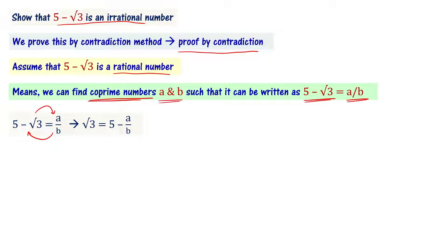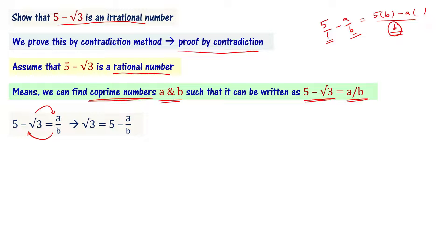Root 3 equals 5 minus a by b. Writing 5 as 5b divided by b, the common denominator gives us root 3 equal to 5b minus a divided by b. Since a and b are integers, 5b is an integer, and 5b minus a is also an integer, and b is another integer.